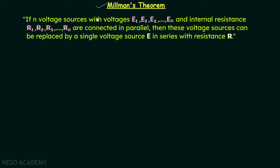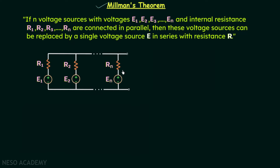If n voltage sources with voltages E1, E2, E3 up to En and internal resistances R1, R2, R3 up to Rn are connected in parallel, then these voltage sources can be replaced by a single voltage source E in series with resistance R. Source number one has voltage E1 with internal resistance R1, source two has E2 with R2, and source n has En with Rn.